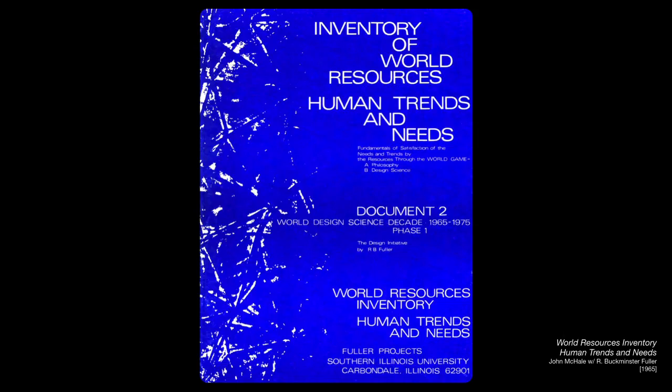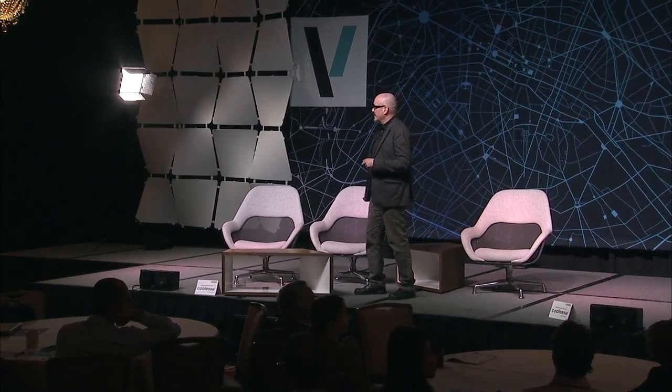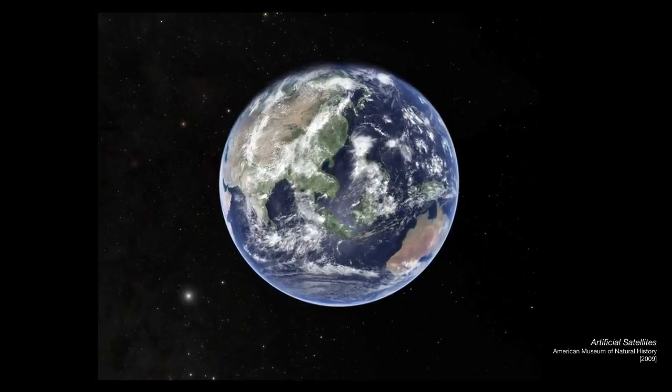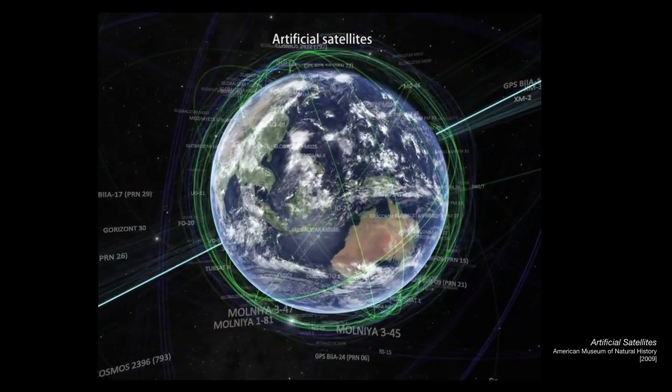He collected all of this data in the mid-1960s in what he called the Inventory of World Resources, Human Trends, and Needs. The idea was to play what he called the World Game — a challenge to players to design a world that would work for 100% of humanity in the shortest possible time without ecological offense or disadvantage to anyone. And today, we actually have this capacity. At the time, it was probably 50 years ahead of what was technically feasible.